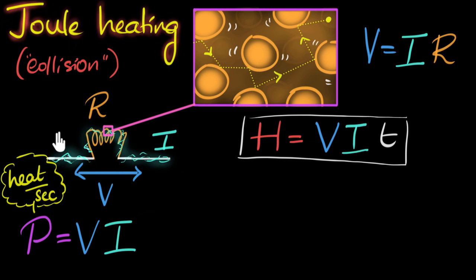And so what we can do is, in this formula, substitute for V as IR and then we'll get IR times I. And so that will give us I squared R times T. So this is another formula in terms of current and resistance.